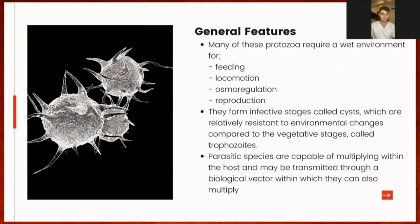Water is an essential component of the life cycle of Protozoans; a wet environment would aid in feeding, locomotion, osmoregulation, and in reproduction. Protozoans also form what we call cysts, which are their infective stages. These cysts are relatively resistant to environmental changes compared to their vegetative stage, which we refer to as the trophozoites. Parasitic species are capable of multiplying within the host and may be transmitted through a biological vector, within which they can also multiply.